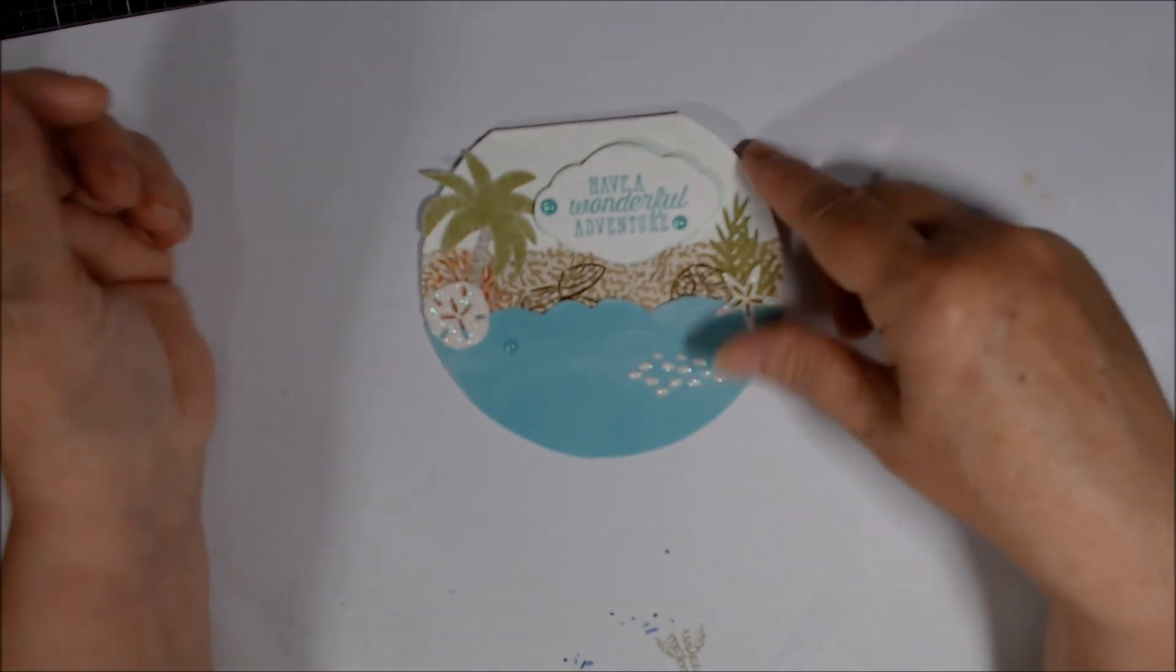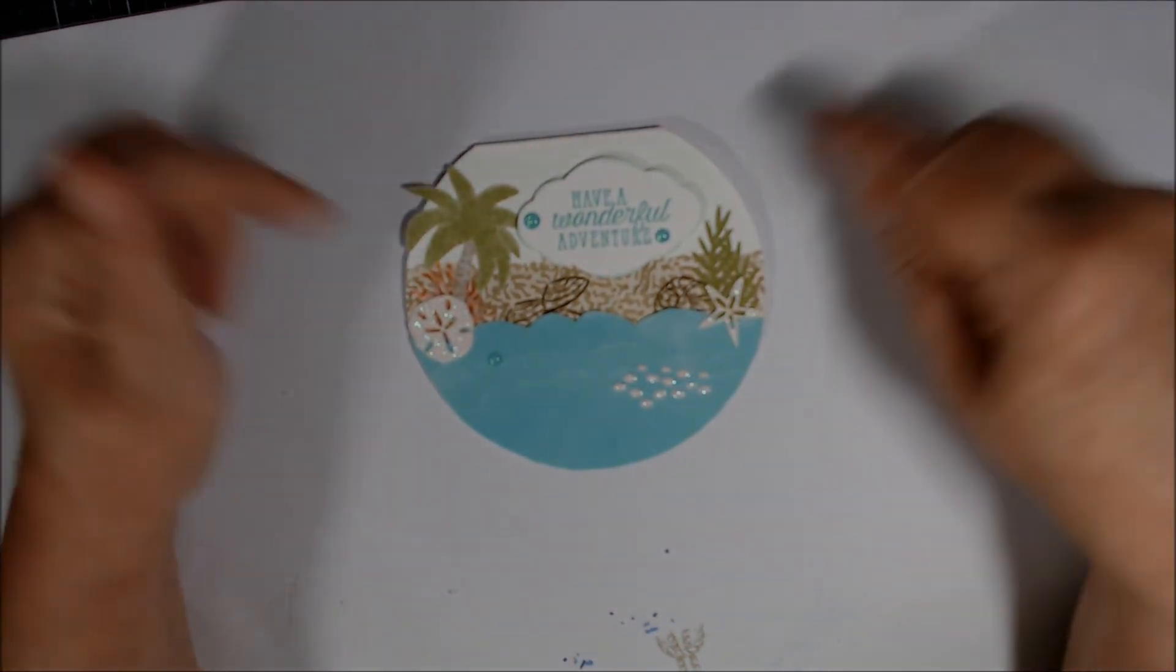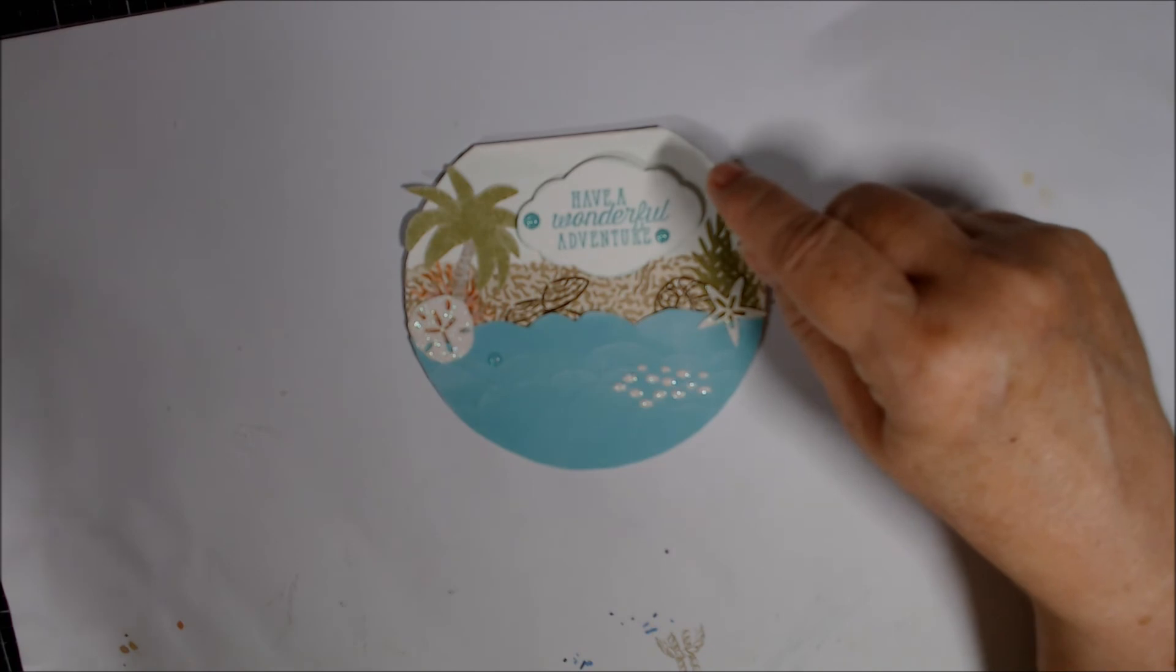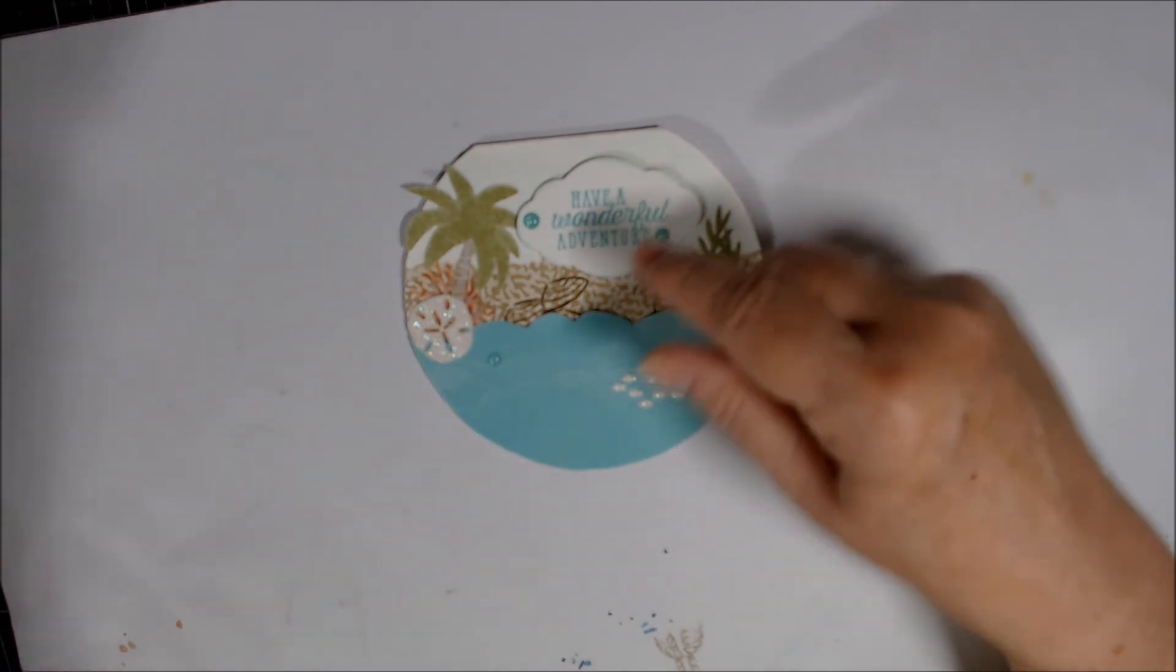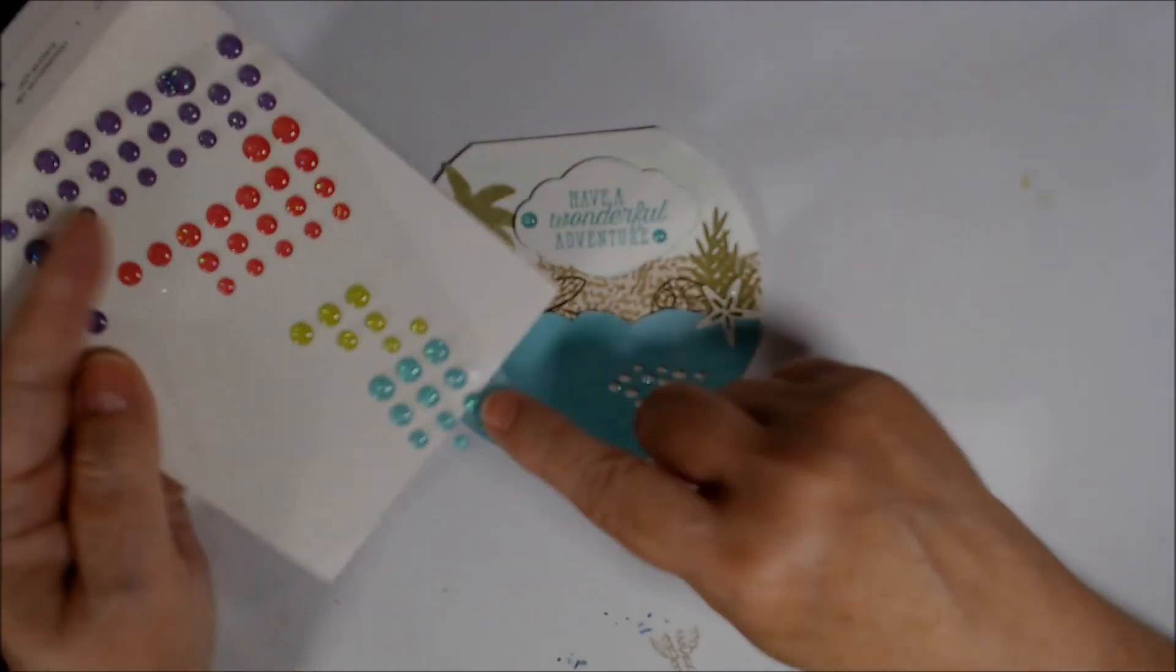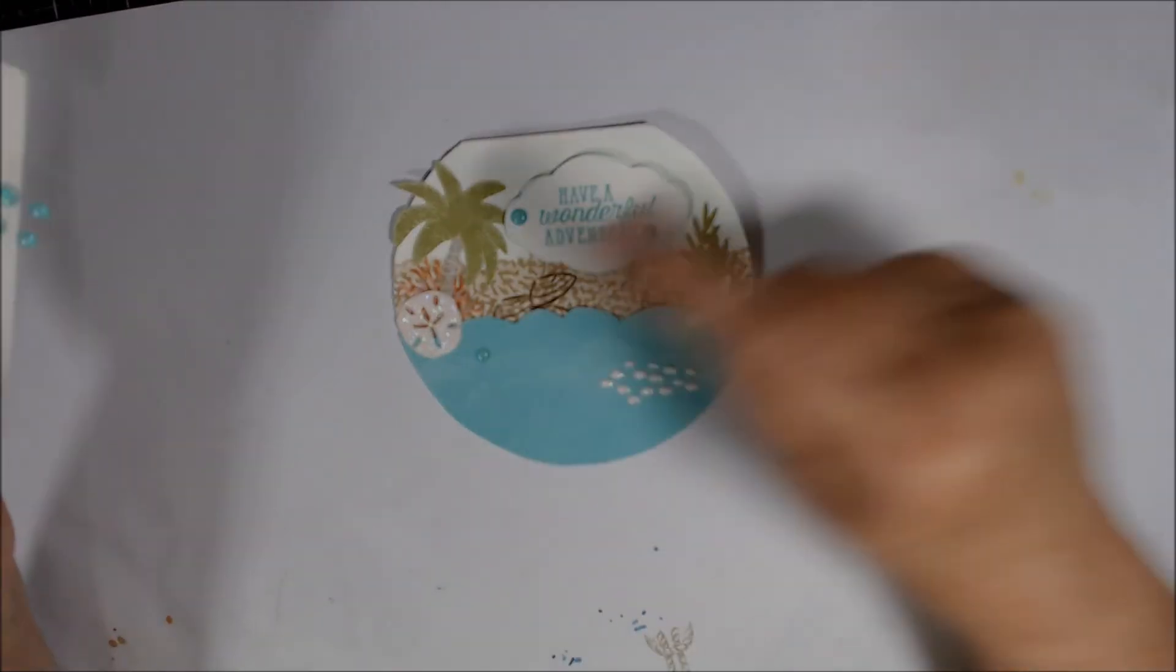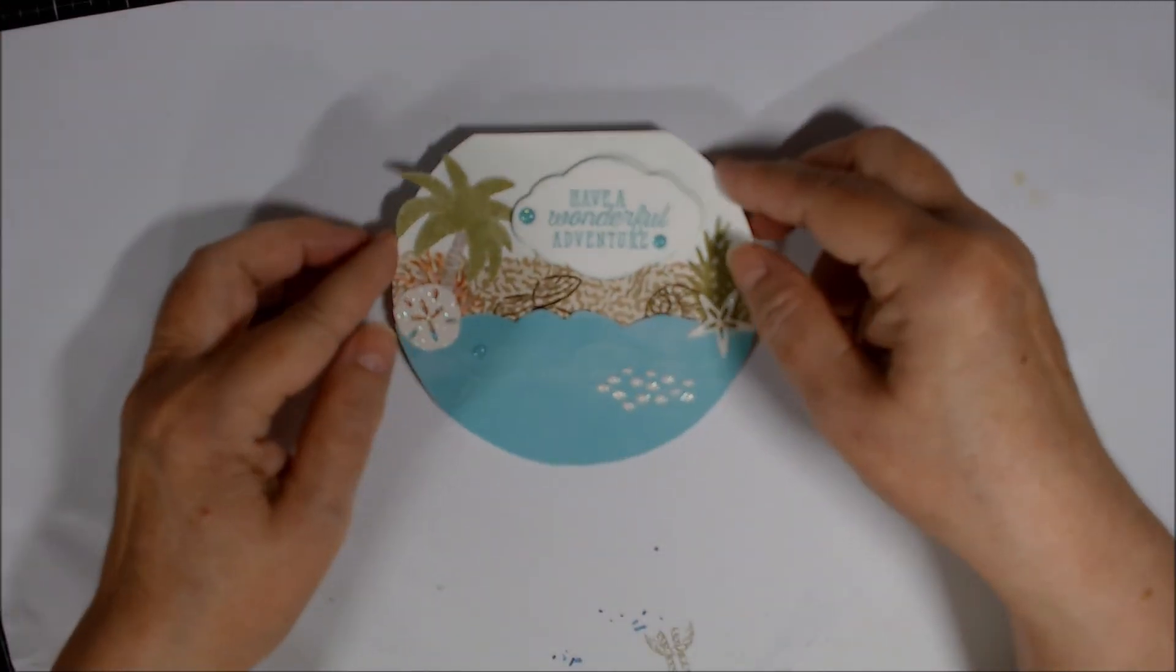And these are the glitter enamel dots and they are in Coastal Cabana. I have one too, and just one more down here. And that's all.